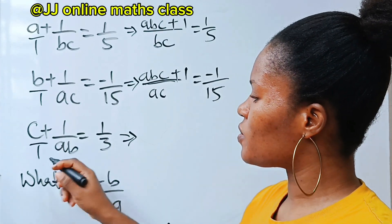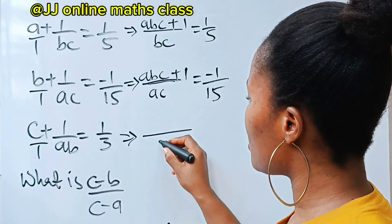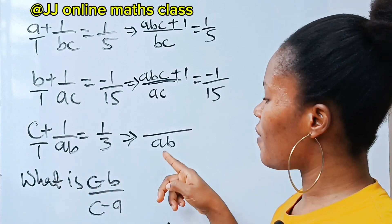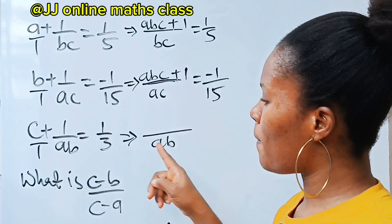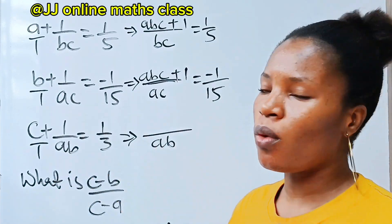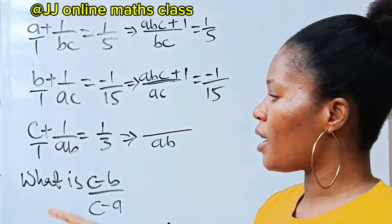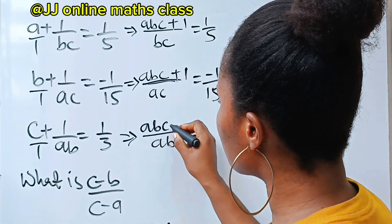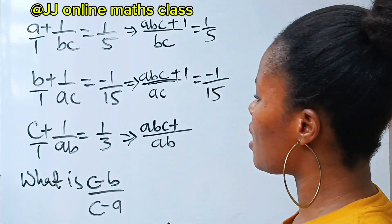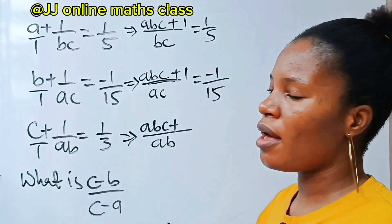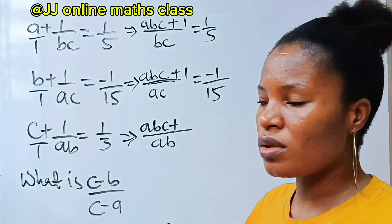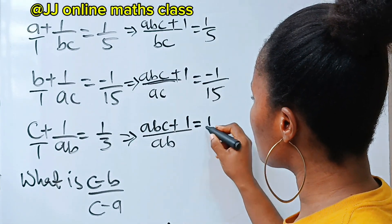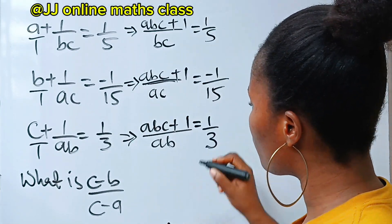Now let's solve the third one. The LCM is ab. ab is divided by 1, you are going to have ab. ab times c will give you abc, plus when ab is divided by ab, you'll have 1. 1 times 1 is 1. This is equal to 1 over 3.